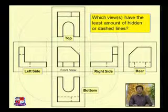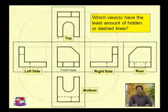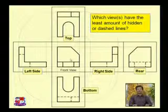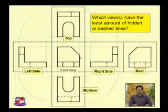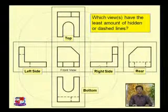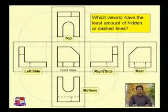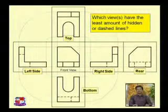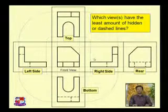Which views have the least amount of hidden or dashed lines? In front view and top view, the least amount of dashed lines are present. Hence it is always advisable to select views with the least number of dotted lines. To draw this object, we should select front view, top view, and either side view — preferably right hand side view — as these three have the fewest dashed lines, making it easier to imagine the shape.